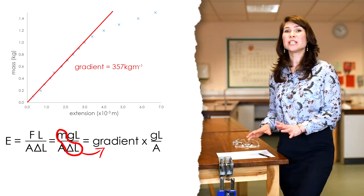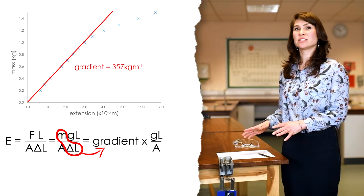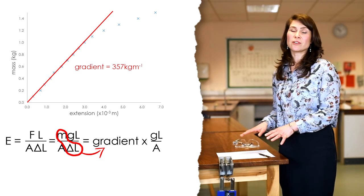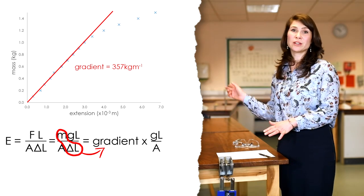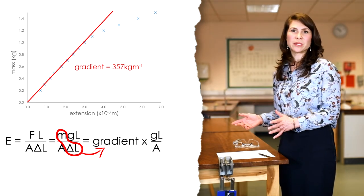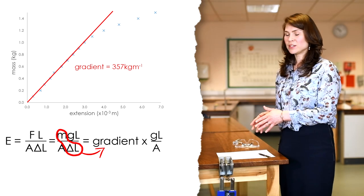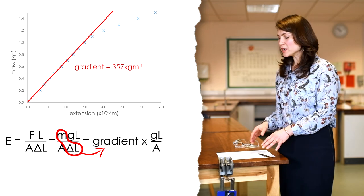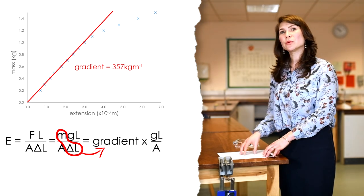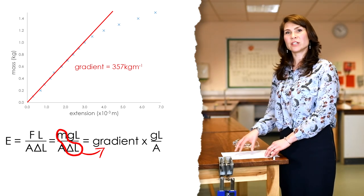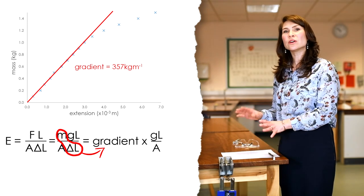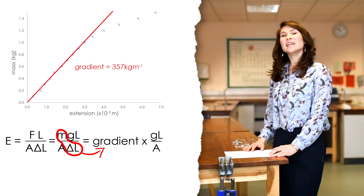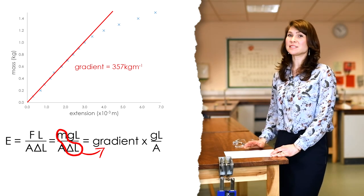When measuring the gradient, it's really important that you take the gradient from the linear part of the graph. Your graph may show a linear part, and then it may curve off, in which case that's great because you've shown that the wire behaves elastically and then starts to behave plastically. However, for determining Young's modulus, it's really important to only take the gradient in the linear part and not include the part after it's gone beyond the limit of proportionality. It's also important on your graph to plot the mass in kilograms.